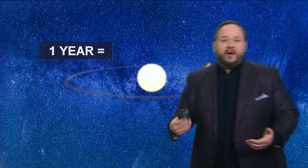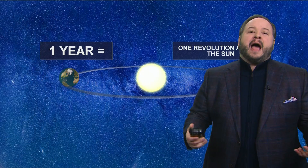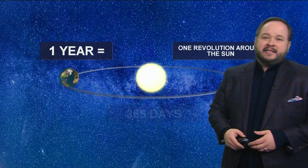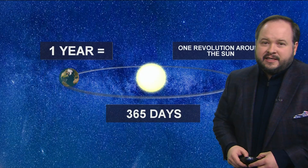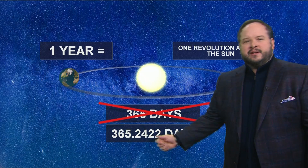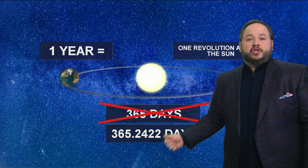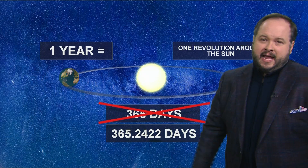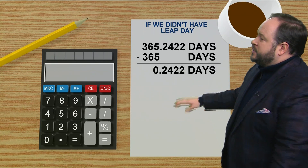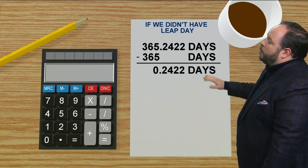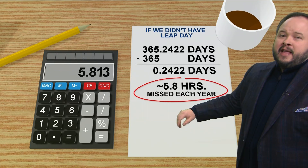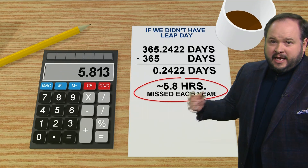One year — one trip around the sun — takes about 365 days, but it's not exactly 365 days. It's just a little bit more: it's 365.2422 days. So how do we make up for that extra time? That extra time roughly equates to about an additional six hours that is missed each year.